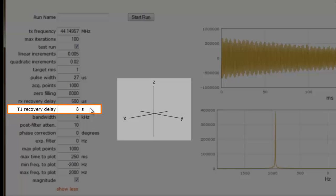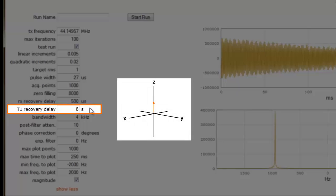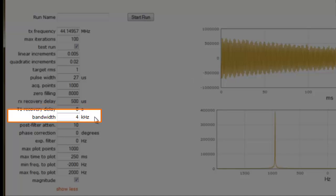Another important parameter is the T1 recovery delay. Here it is set to 8 seconds. This means there is an 8 second delay between each pulse that is executed. We have our bandwidth set to 4 kHz, and a corresponding post-filter attenuation value of 10.